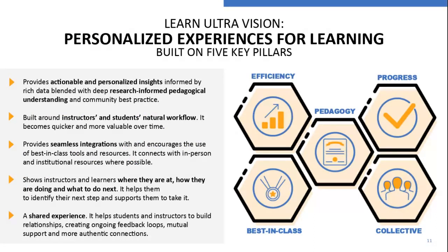Shifting into the product roadmap, we wanted to talk about something we've been spending a lot of time on: our Learn Ultra product vision — thinking about where we see ourselves in the next three to five years, what areas we really want to focus on, and what we are not going to do. Over the last months, we've been talking to a lot of institutions, students, and instructors to understand how the pandemic has changed things. This has allowed us to refine and sharpen our product vision, resulting in five product pillars.